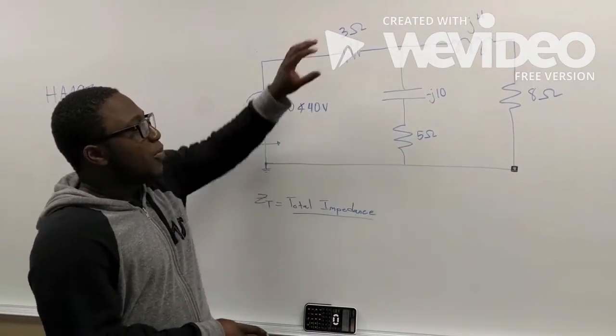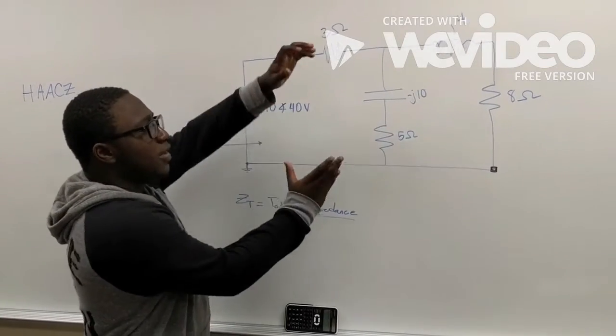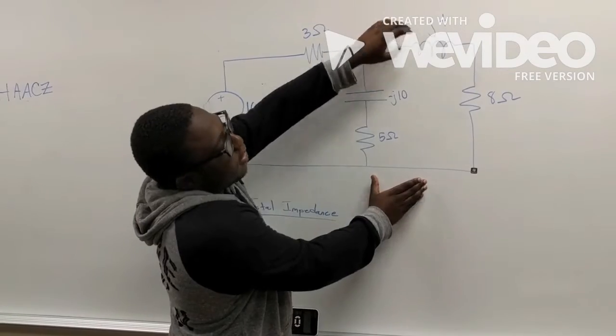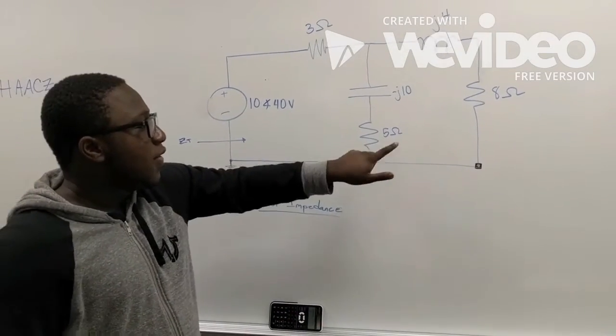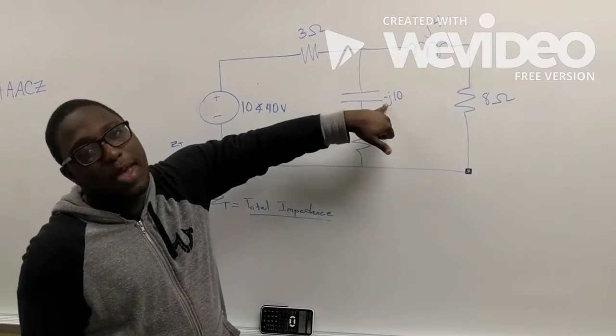Normally, we would worry about both a series and parallel impedance. Today, we're firstly going to focus on the parallel portion of this circuit, which consists of the two resistors, the one inductor, and the capacitor.